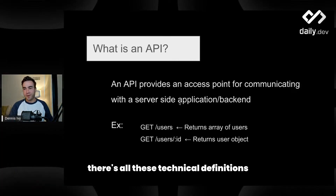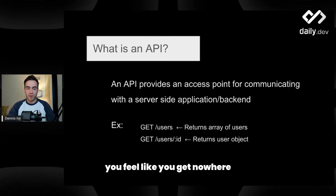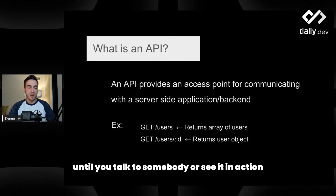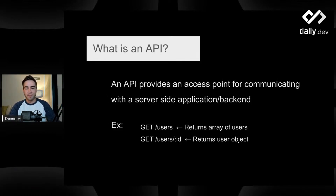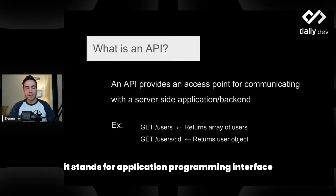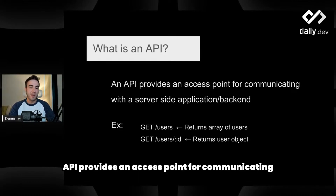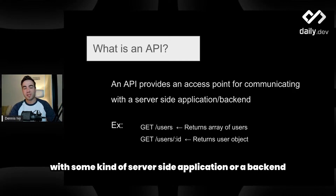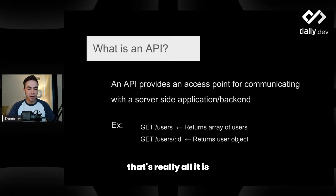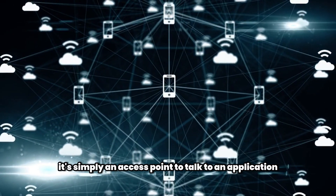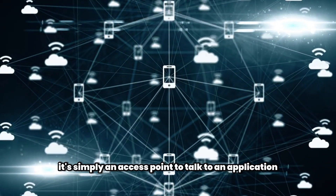What's an API? There are all these technical definitions, and really after you read them you feel like you get nowhere until you talk to somebody or see it in action. It stands for Application Programming Interface. The way I like to describe it is: an API provides an access point for communicating with some kind of server-side application or a backend. That's really all it is — it's simply an access point to talk to an application.